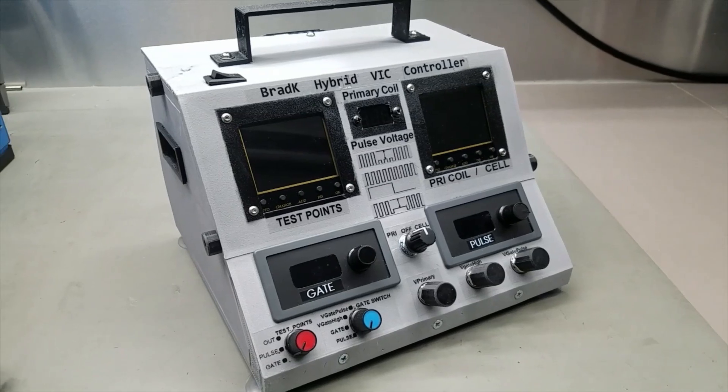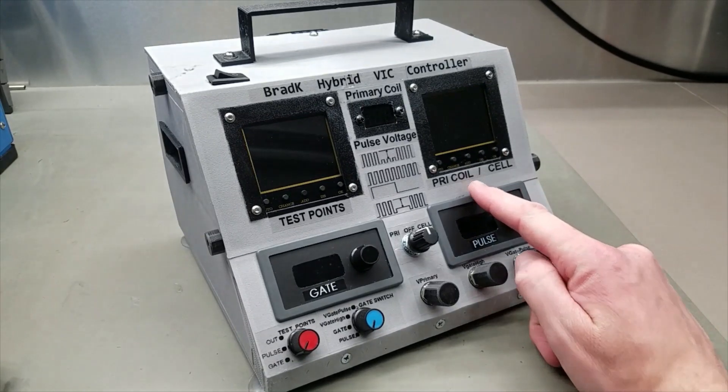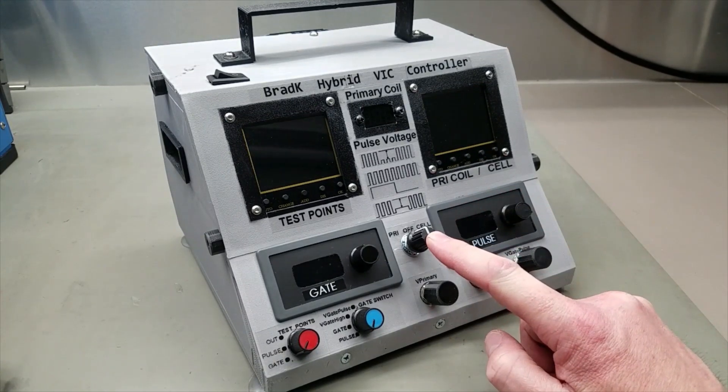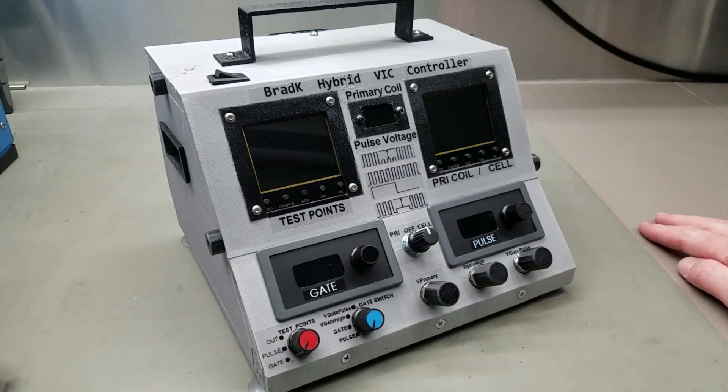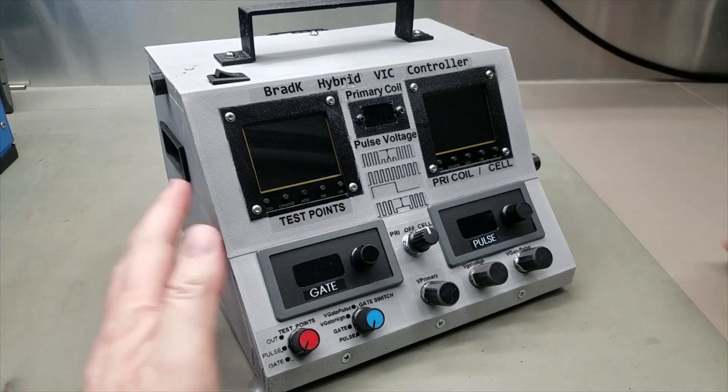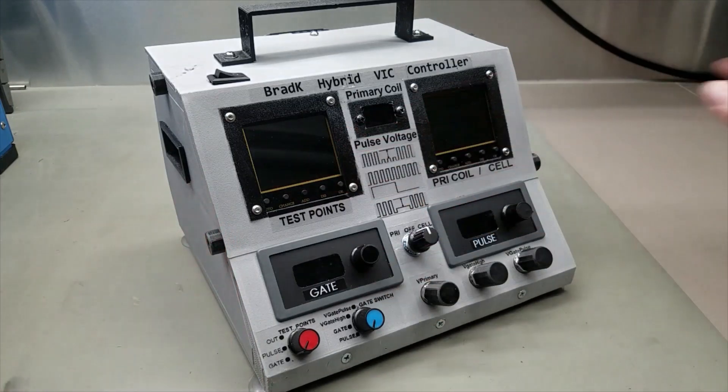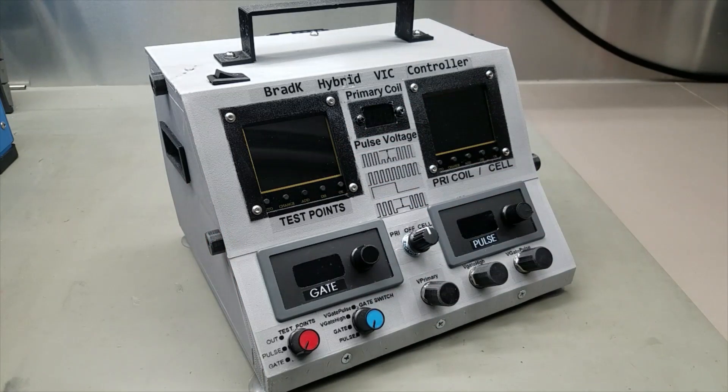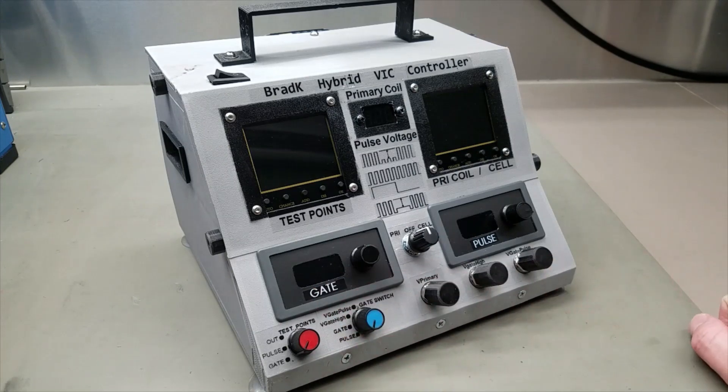Alright, so one other thing I need to point out here, if you haven't noticed, each cell scope has a switch associated with it. That allows me to view various points in the circuit without having to have multiple oscilloscopes. Initially, my plan was to have something much bigger where I'd have 4 oscilloscopes on it, showing everything I needed to see at the same time. But it was just too big. And my 3D printer wouldn't print anything that big either. So, I decided to go with switches instead.